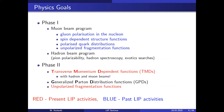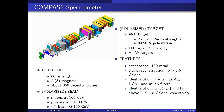In phase one, we were most interested in the muon beam program: studying spin structure functions, polarized parton distribution functions, and unpolarized fragmentation functions. In phase two, the focus shifted to transverse momentum dependent functions, with muon and hadron beams, and generalized parton distribution functions, while still continuing with polarized fragmentation functions.